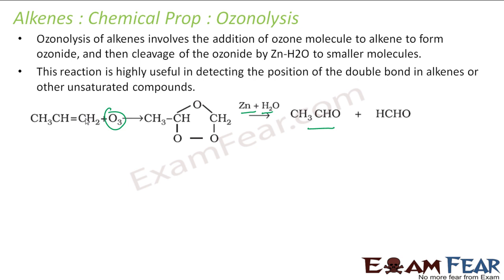If the double bond was, let's suppose in this compound, you have to find where was the double bond. So you do the ozonolysis now. If you get product like CH3CH2CH2COH, this means that double bond is somewhere here and here.